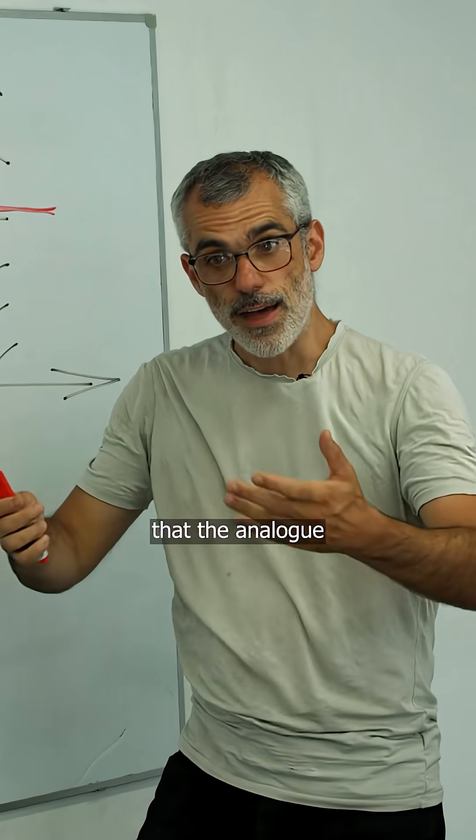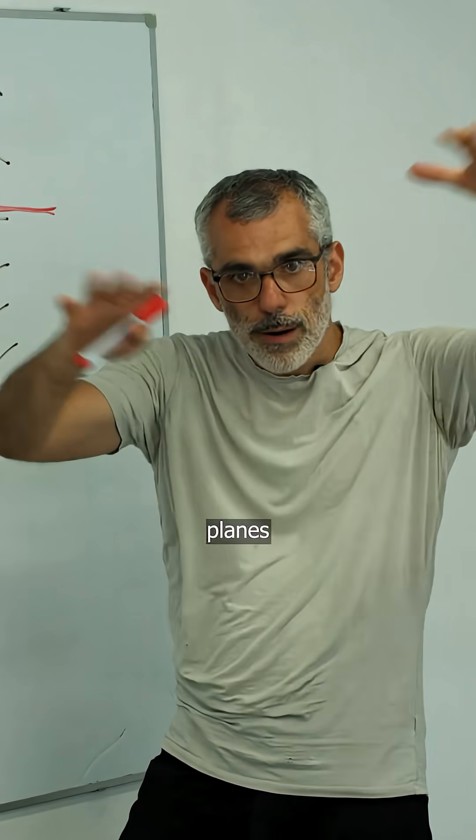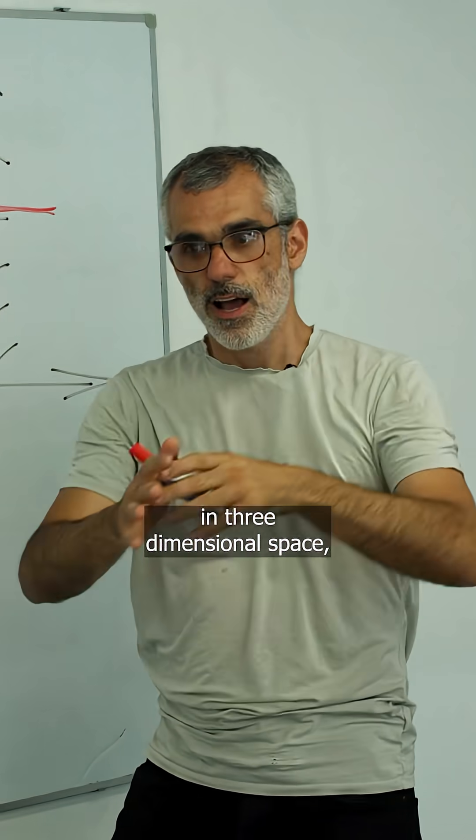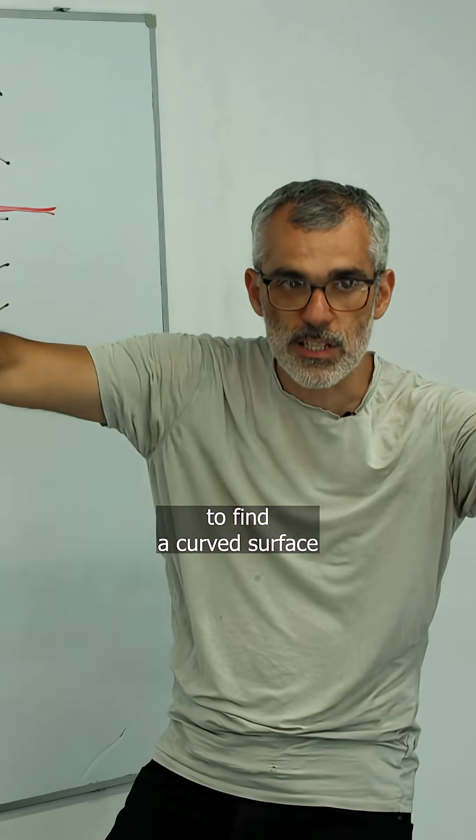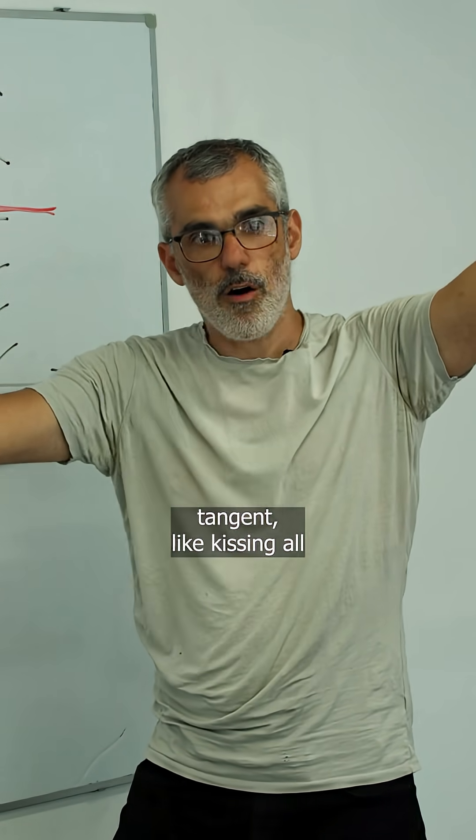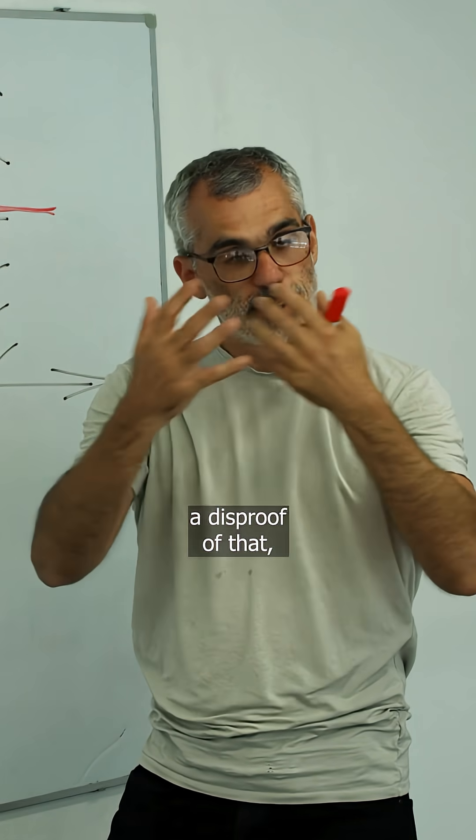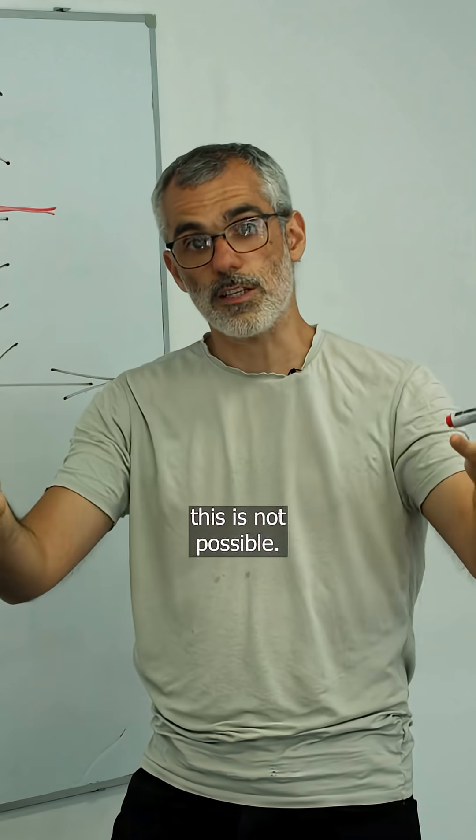You might guess that the analogue in three dimensions is also possible. You have a bunch of planes in three-dimensional space, and it's possible to find a curved surface that is tangent, like kissing all these little planes. In fact, the contact structure is a disproof of that. This is not possible.